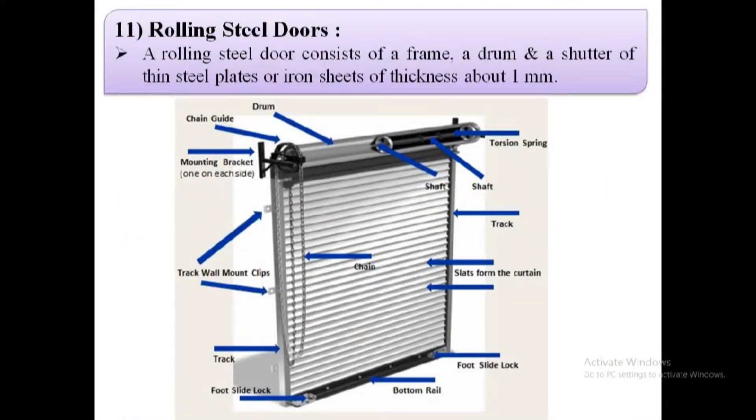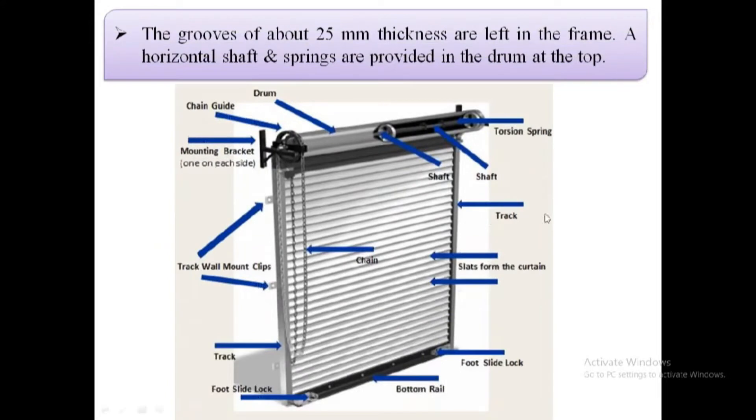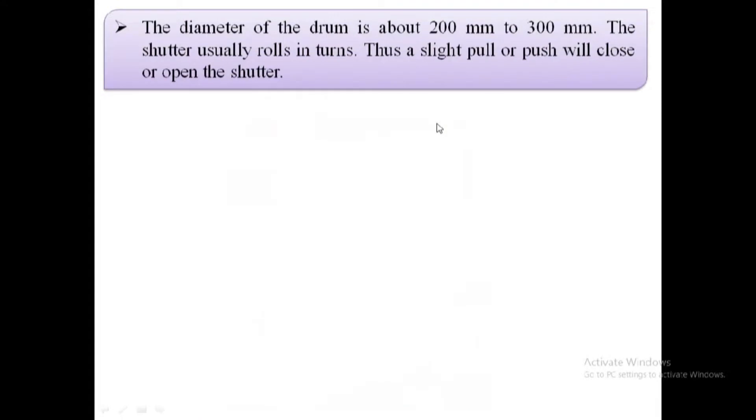Rolling steel shutter door. This door consists of a frame, a drum, and a shutter of thin steel plates, known as slats, interlocked together.